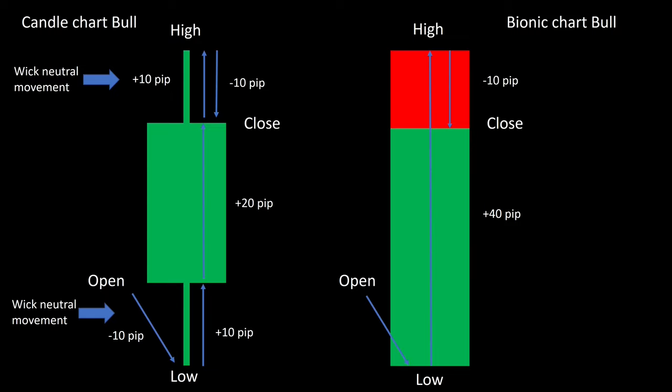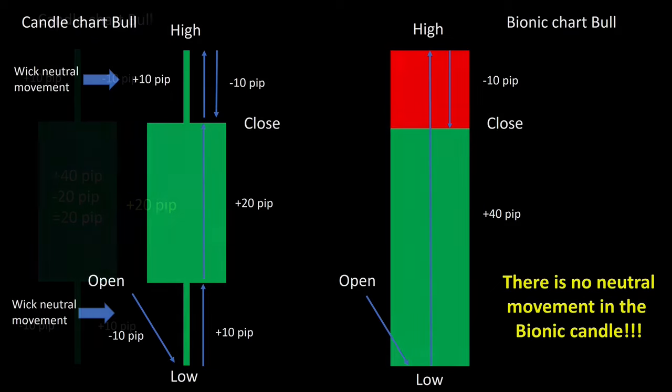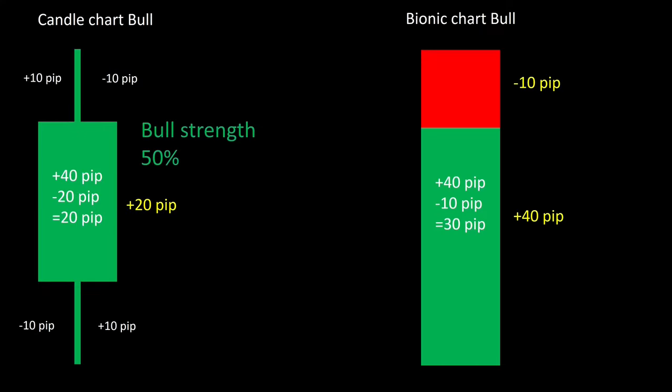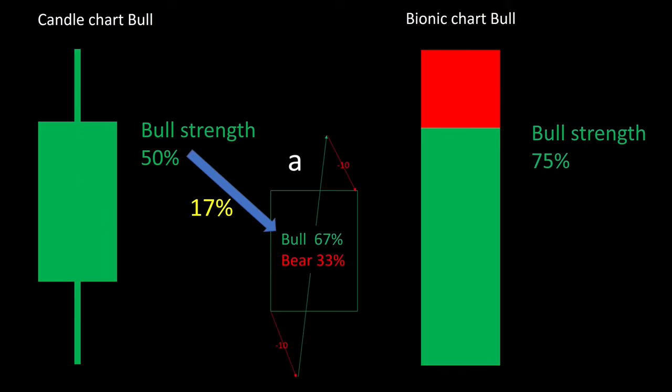Thus there are only two movements in the bionic candle, but they are not neutral. Now let's calculate the resulting strength. With a normal candle, the strength is determined by the candle body; in this case it is 50%. The candle body of the bionic candle is significantly larger, as the lower area is rated bullish. In this case it is 75%.